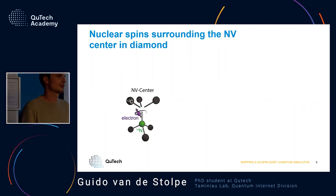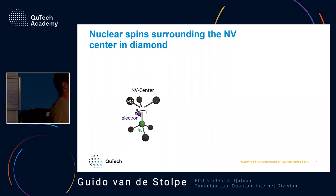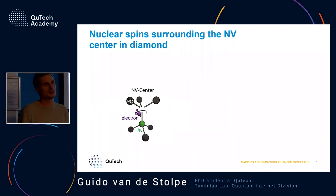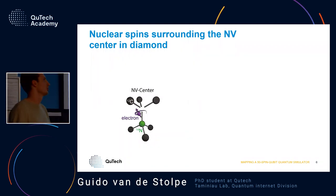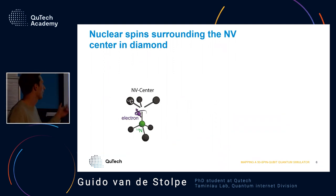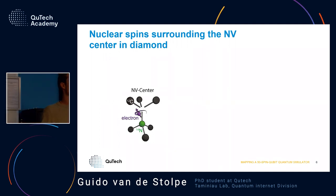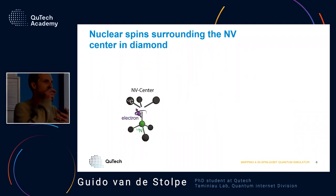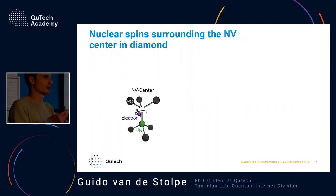We study nuclear spins in diamond that surround an NV center — a nitrogen-vacancy center. A nitrogen-vacancy center is a defect in a diamond crystal lattice: two carbon atoms are missing, one gets occupied by a nitrogen atom, and the other is vacant. An electron can get trapped in that vacancy and that is the NV center. We can access that electron via microwaves to control the spin state, and it has an optical interface.